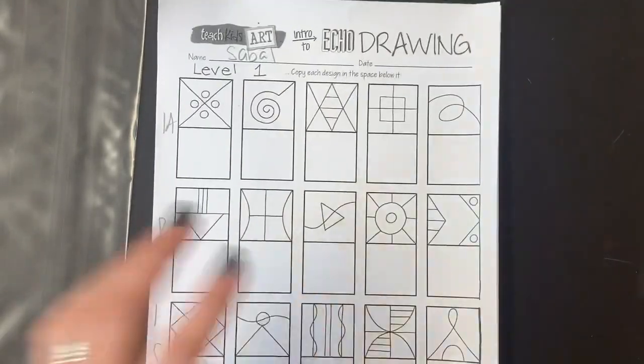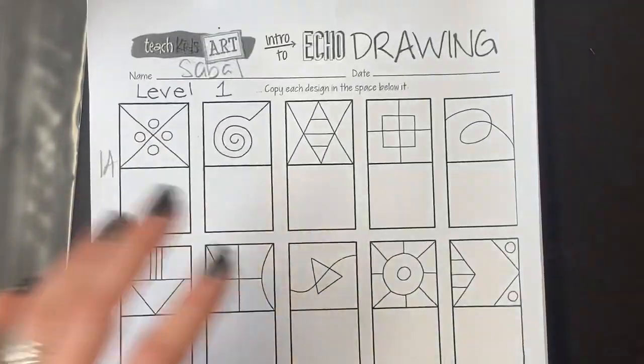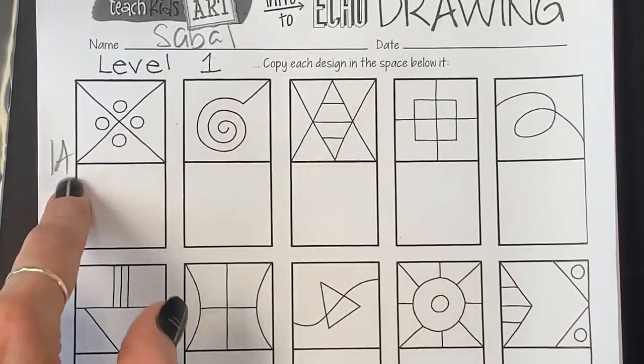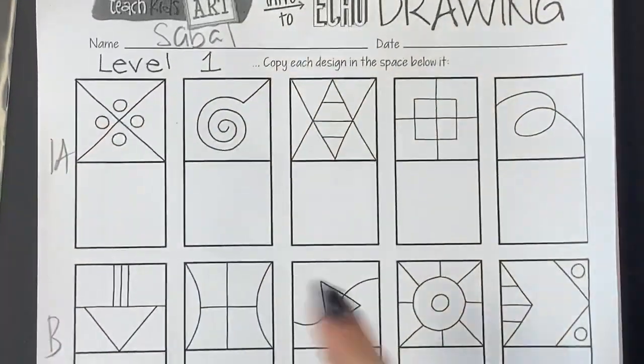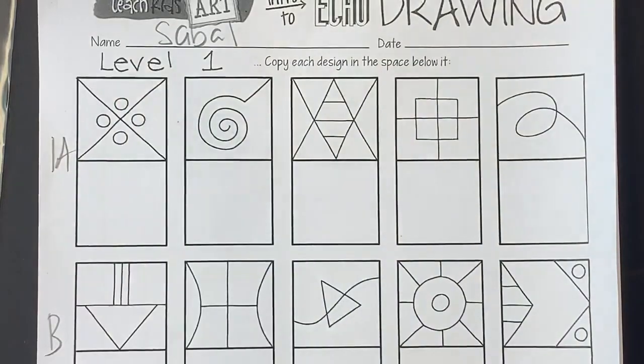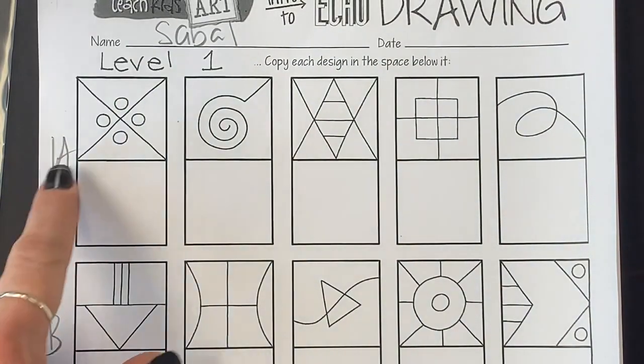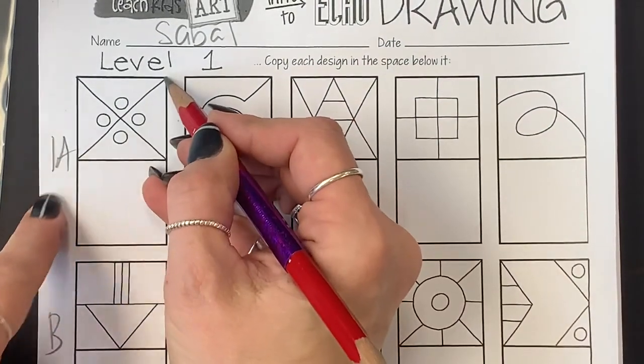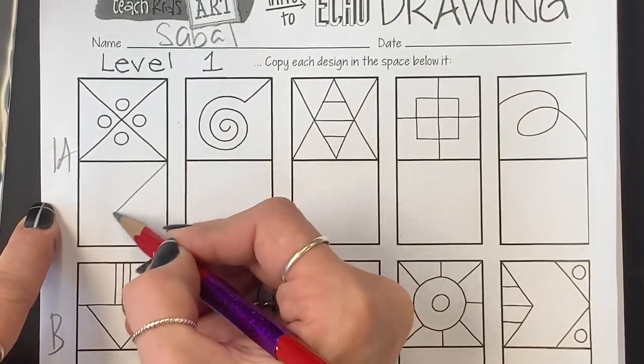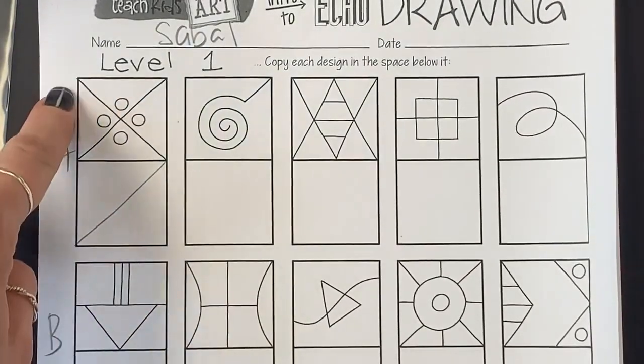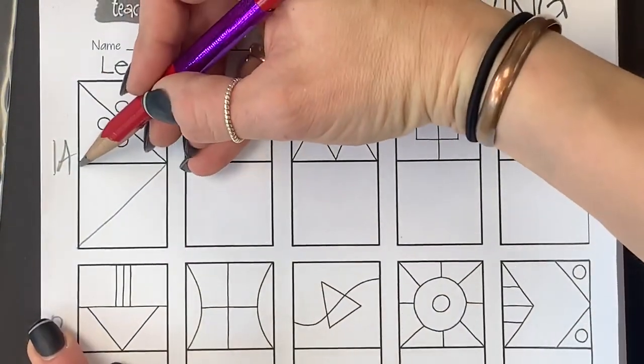Now, your job will be to try every single one on level 1A to start. So, you want to look at the corners first. Are any lines touching the corners? Yep, right here, so I know I can draw a straight line from corner to corner. Another one, same thing, corner to corner.